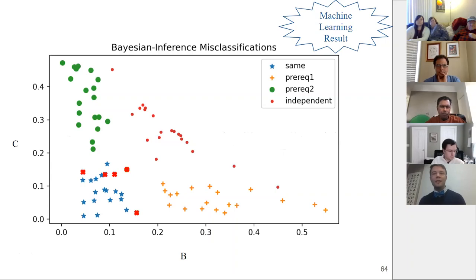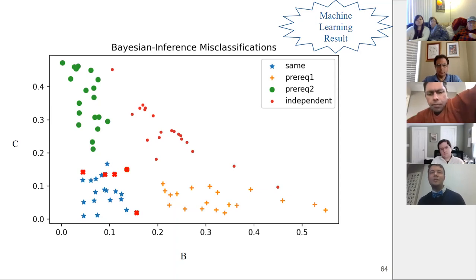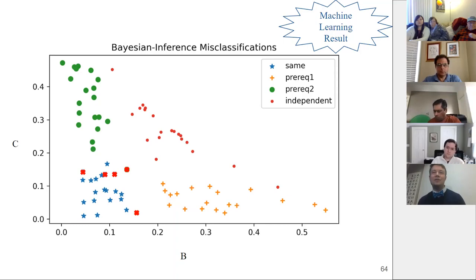With these assumptions, we get really good classification performance — we can identify the relationship between pairs of items with high accuracy. The only mistakes are again on the boundaries between regions. This method also has a tendency to underestimate the amount of structure, so it's more likely to identify a prerequisite or unrelated relationship than to assume two things are equivalent. In the domain of application, that may be slightly preferable to assuming too much about a student and teaching them inefficiently.